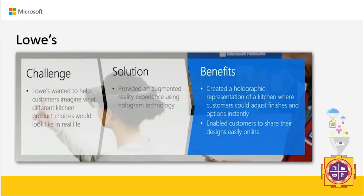Lewis provides different choices for furnishing kitchens. They identified a key customer problem: as a customer designing a kitchen, it's hard to articulate what style you like — there's always some missing piece. To solve this, via augmented reality, they created a holographic representation of a customer's selected kitchen style, where customers could instantly adjust finishes and options.